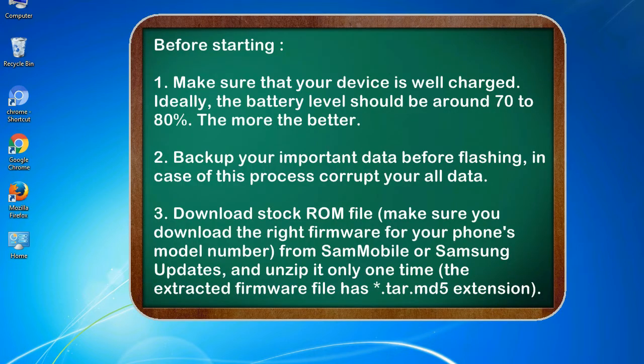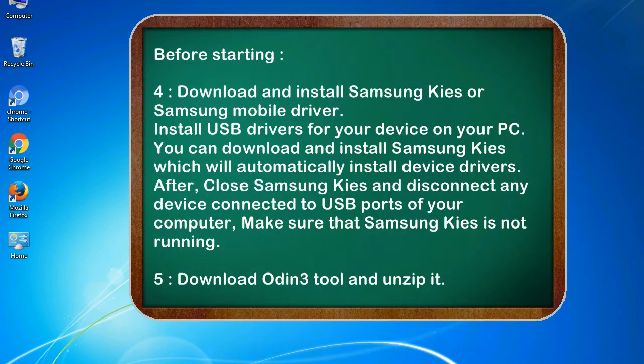Before starting: 1. Make sure that your device is well charged — ideally the battery level should be around 70 to 80%, the more the better. 2. Back up your important data before flashing, in case this process corrupts your old data. 3. Download the stock ROM file. Make sure you download the right firmware for your phone's model number from Sammobile or Samsung Updates, and unzip it only one time. The extracted firmware file has a .tar.md5 extension.